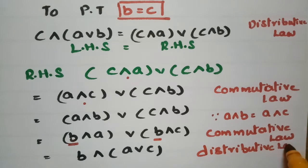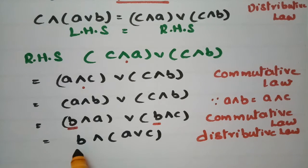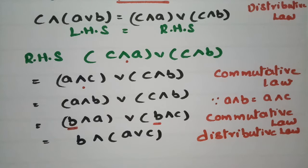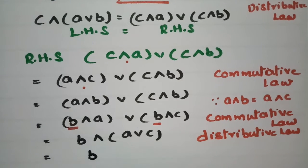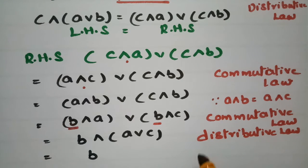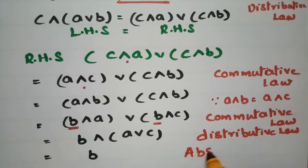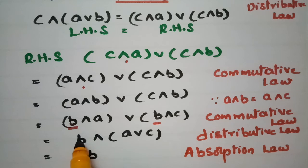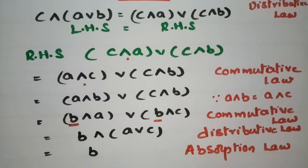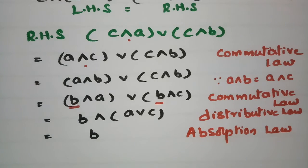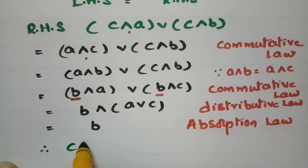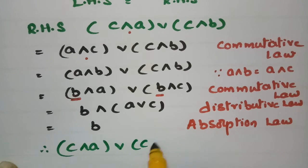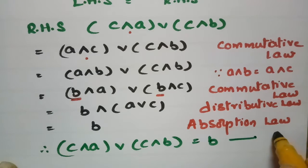Now I apply the absorption law. According to the absorption law, b∧(a∨c) — the first term b comes out directly. Therefore, from the RHS, c∧(a∨b) = b. This is our first result.